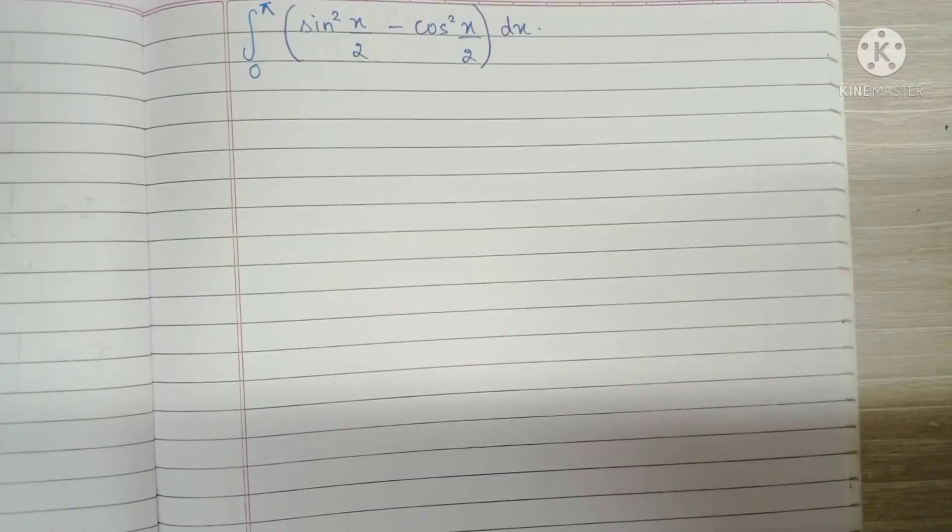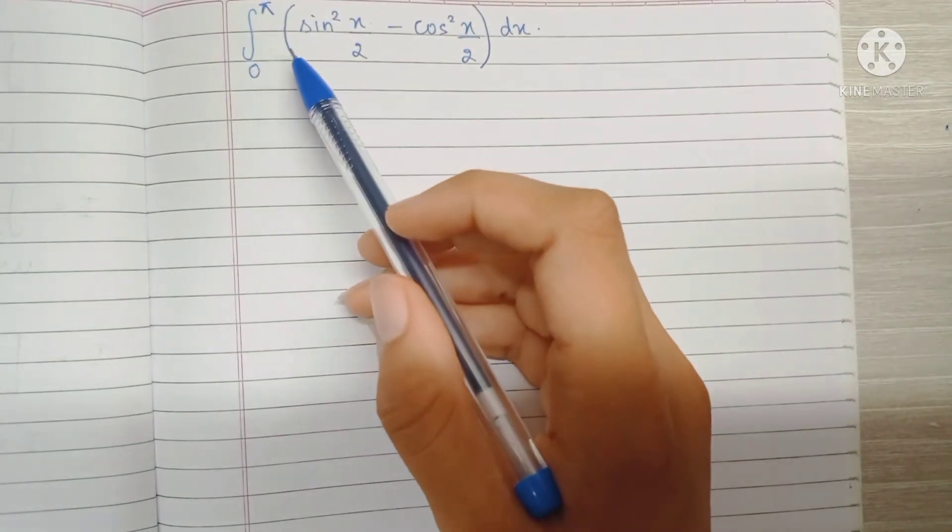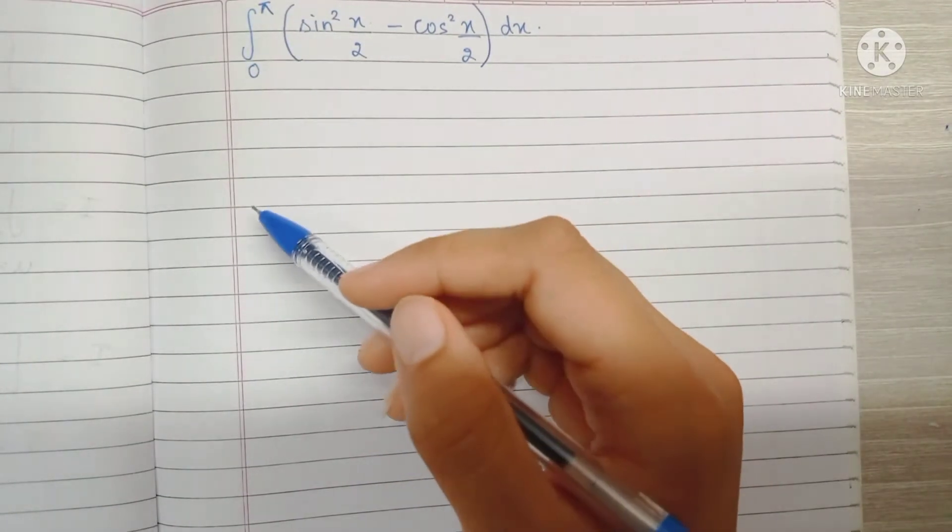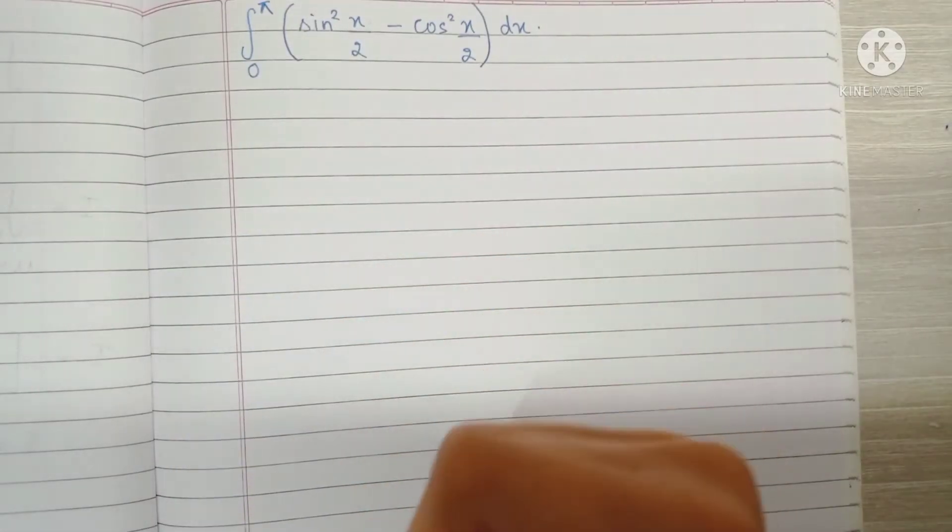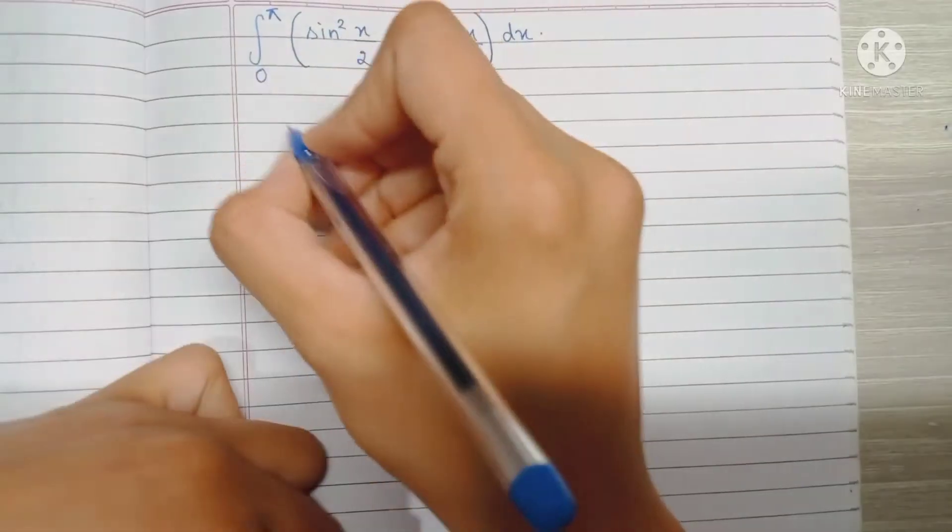Hey guys, welcome back to my channel. Today we'll be solving this question: the integral from 0 to pi of sine squared x by 2 minus cos squared x by 2 dx. So let's begin.